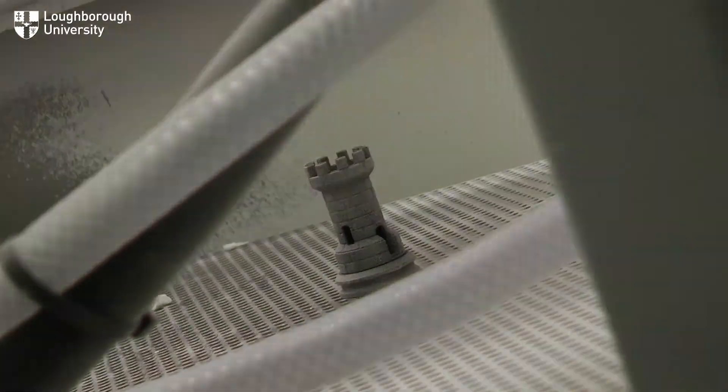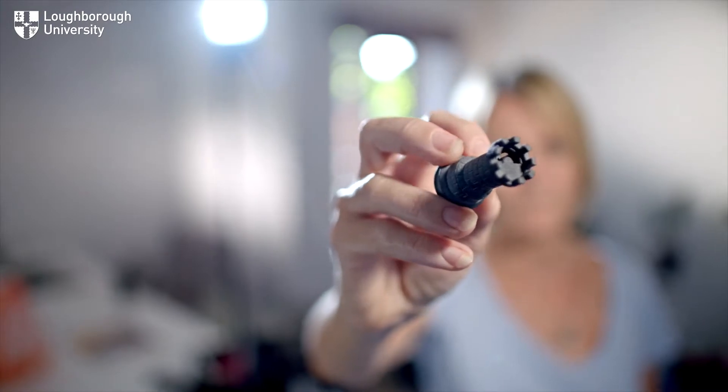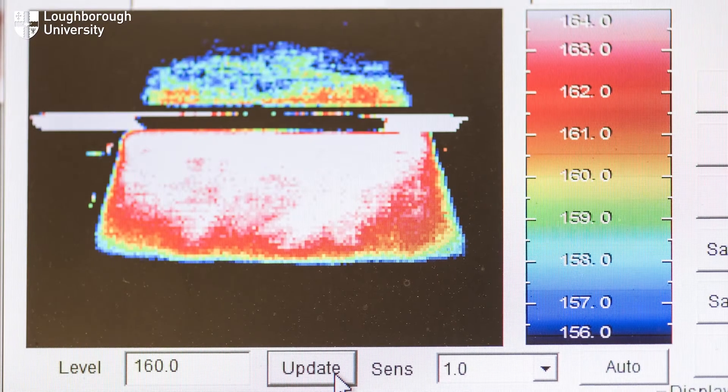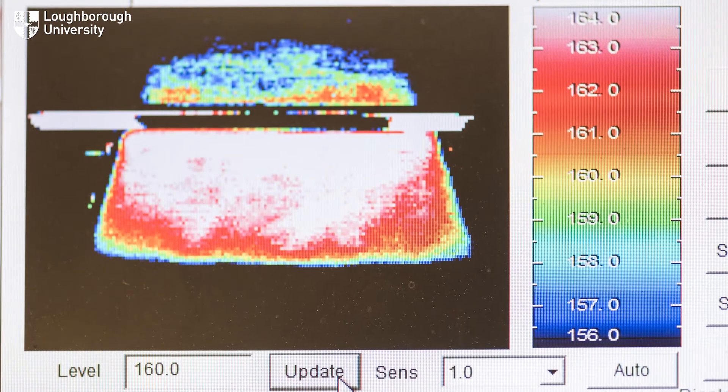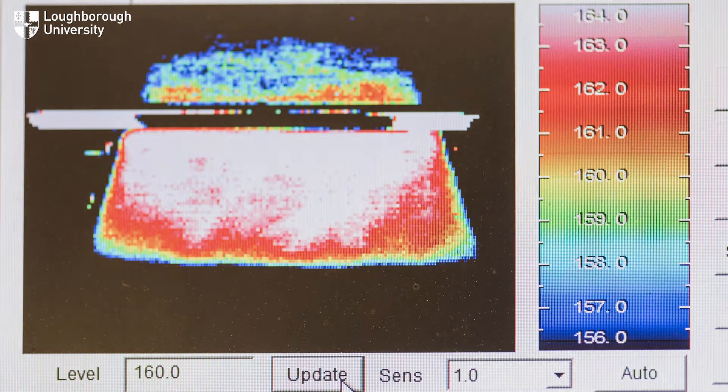Parts are taken out of the unmelted powder for cooling, ready for finishing. The temperature is carefully regulated to precisely control the level of particle melting throughout the build.